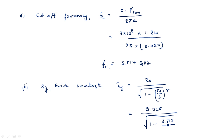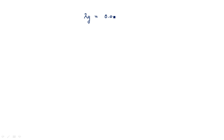All values are known — just substitution and simplification. Lambda-not is 0.025, divided by square root of 1 minus (3.517/12) squared. Note: even if the cutoff frequency is not explicitly asked for, you must calculate fc first as it is needed for lambda g. After simplification, lambda g equals 0.0261 meters.